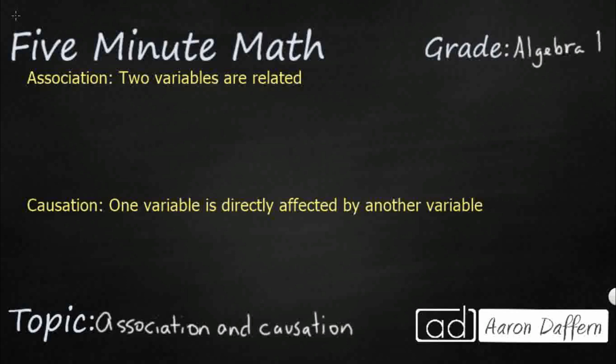So let's define association first. Association is simply when two variables are related. They don't necessarily cause one another, but you can understandably link the two. So here's an example.